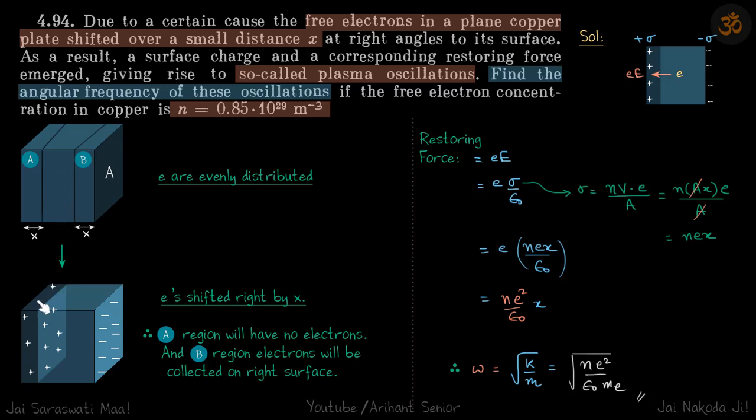The left side will have a lot of holes evenly distributed in this whole volume A. On the right side, these electrons will be on the surface. The number of electrons will be the same as the number of holes. Therefore, region A will have no electrons and region B electrons will be collected on the right surface.